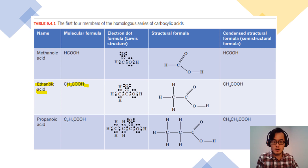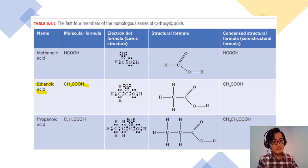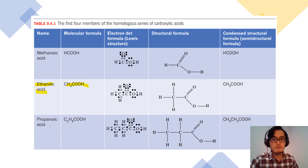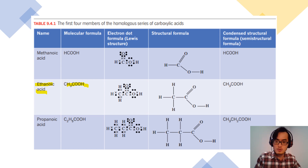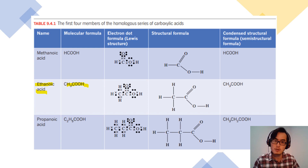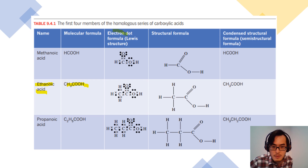When talking about electron dot formula or the Lewis structure, it shows the dots and crosses. If it's a structural formula, it shows the bonds. If it's a condensed structural formula, it's very similar to the structural formula but without the bonds. Bear in mind, structural formula shows the bonds but does not show the lone pair electrons. You may also come across the Kekulé structure — the difference between structural formula and Kekulé structure is that Kekulé structure shows the lone pair electrons, while structural formula does not.